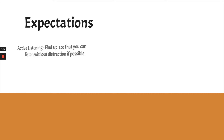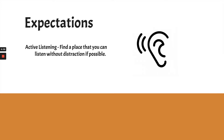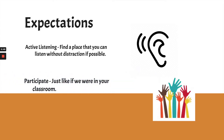Just a couple of expectations. Number one, I'd like you to be an active listener. That means I want you to find a place that you can listen without distraction if possible. I know that can be hard when we have shared workspaces, but try because you'll get the most out of the lesson. Also participate as if we were in your classroom — when I ask a question, think about an answer and maybe even say it out loud. And if there's an adult or an older sibling who can watch the lesson with you, that would be awesome so they can help explain things.